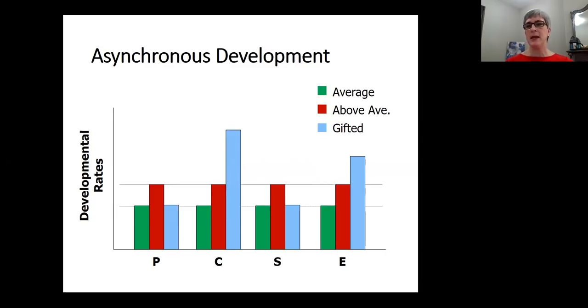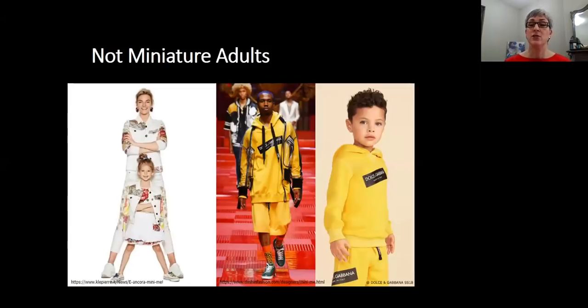This out of sync development causes some discord with their environment, but also causes some tension within themselves. How come I can think like this and I can envision this amazing picture in my head, but I can't make my hand do it. Or maybe I'm thinking on a level and I kind of understand my friends, but they don't understand what I'm talking about.